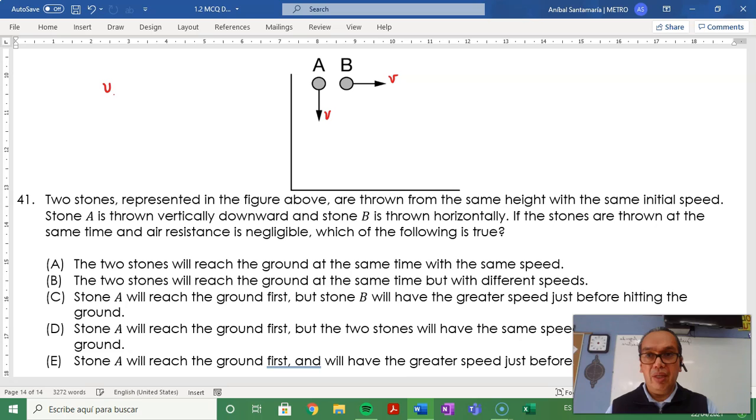You have that the final velocity squared has to be equal to the initial velocity squared v₀ plus 2g delta y. In other words, the final velocity is going to be the square root of v₀ squared plus 2g delta y.